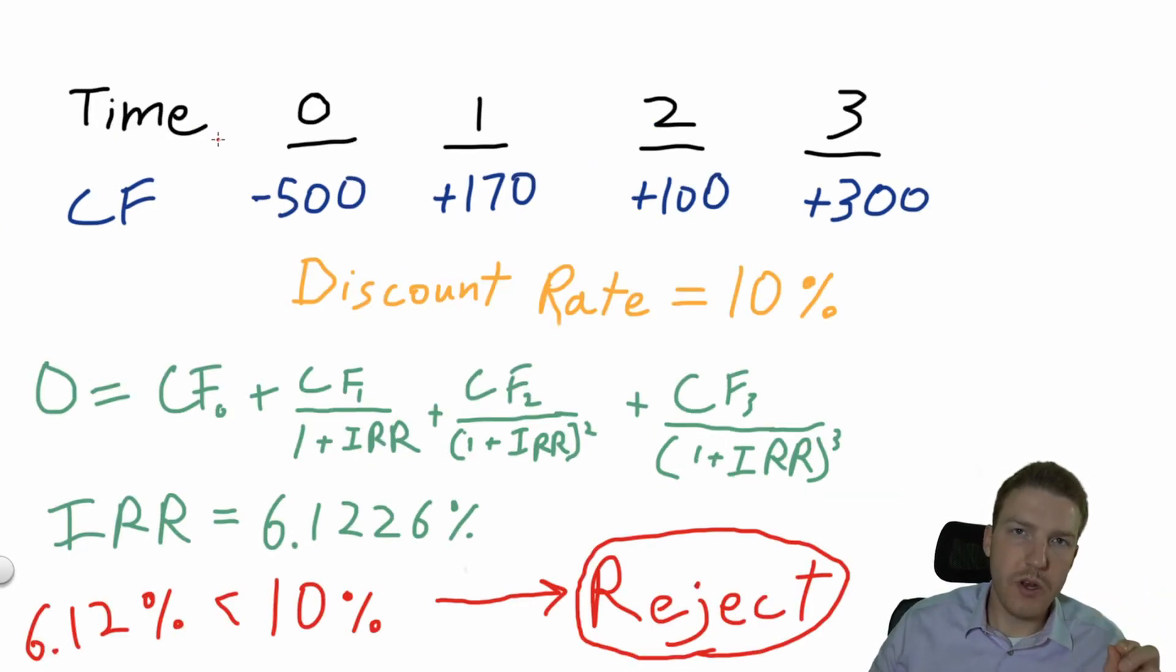We're going to use the same example as before. We want to buy this rental property. It's going to cost us $500 at time zero. We're going to have a net positive cash flow of $170 at time one, $100 at time two, and at the end, maybe we sell it for $300. We know our discount rate is 10%. We can also call this our required rate of return.